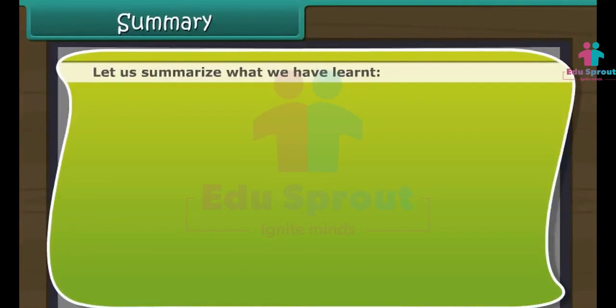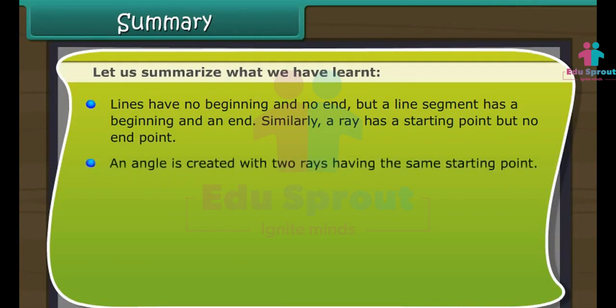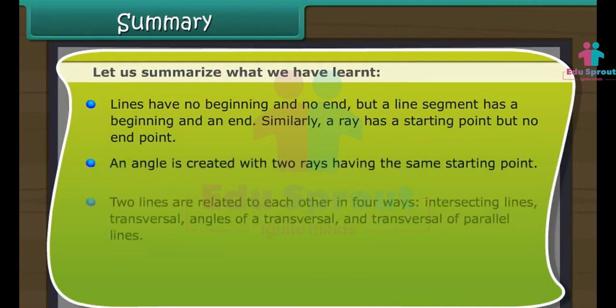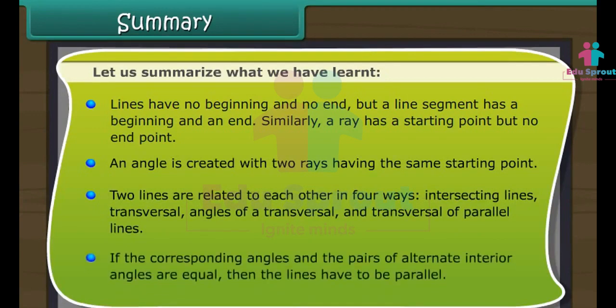Let us summarise what we have learnt. A line has no beginning and no end, but a line segment has a beginning and an end. Similarly, a ray has a starting point but no end. An angle is created with two rays having the same starting point. Two lines are related to each other in four ways: intersecting lines, transversal, angles of a transversal, and transversal of parallel lines. If the corresponding angles and the pairs of alternate interior angles are equal, then the lines have to be parallel.